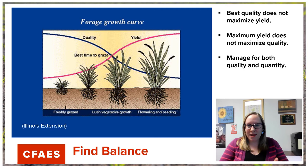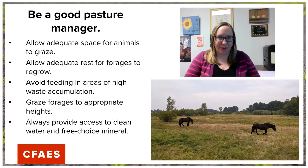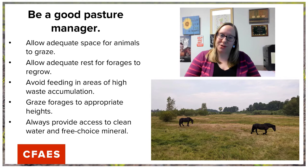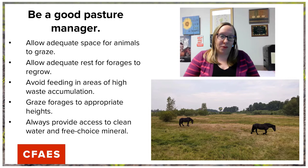Now that we have a better understanding of the plant science behind how plants grow, let's talk about the key aspects of being a good pasture manager, because that involves understanding both the growth of the plants and the growth of our livestock. We want to make sure we're allowing adequate space for our animals to graze and adequate rest for our forages to regrow. We need to make sure that if we're feeding supplemental feed or mineral, we're doing so in an area that avoids high waste accumulation. There are multiple issues that happen when animals pick up bits of their own fecal material while eating, and we want to avoid those, including illness and parasites.